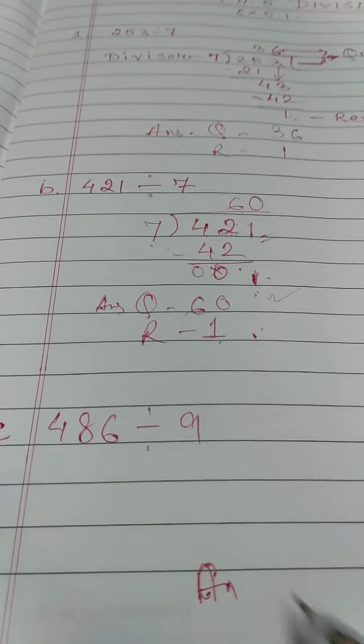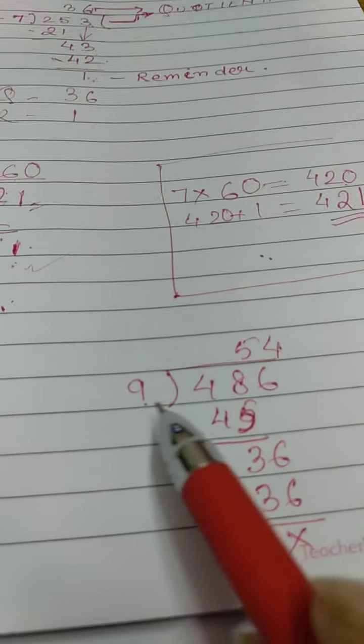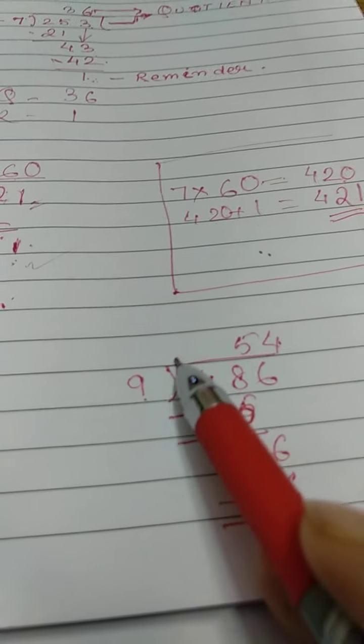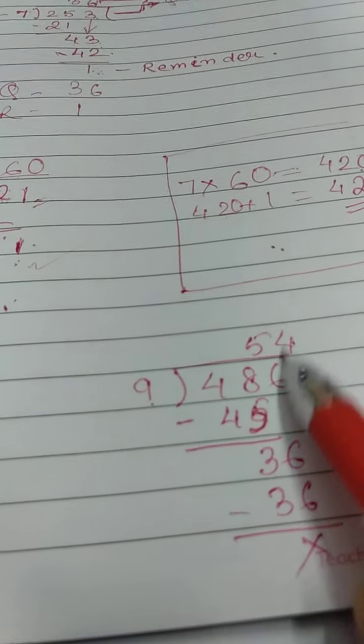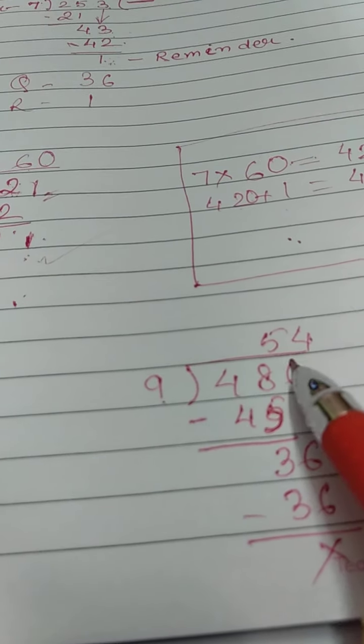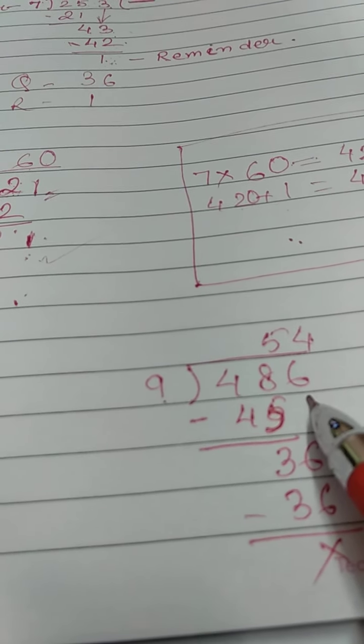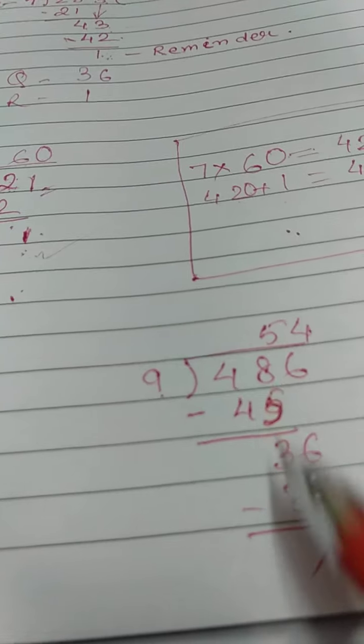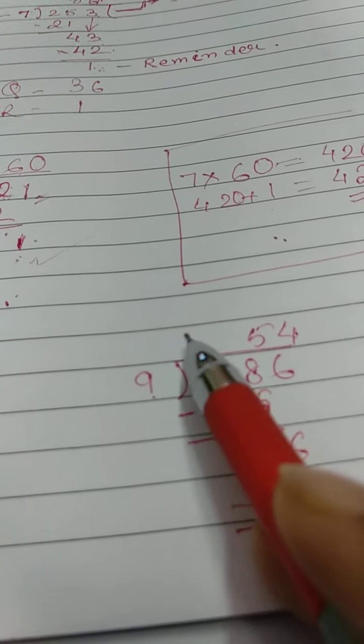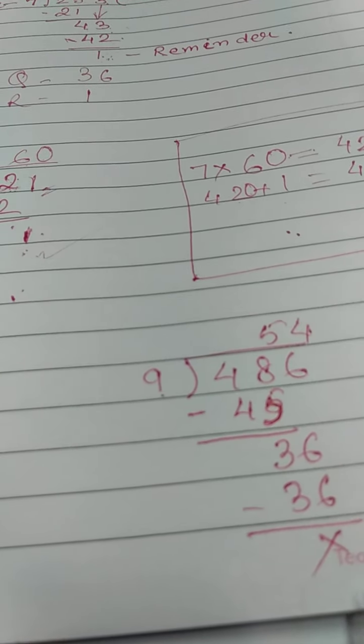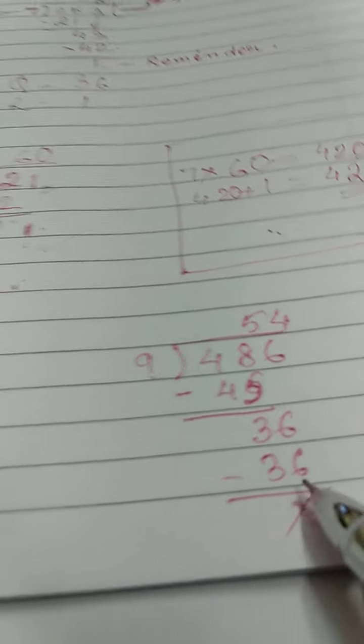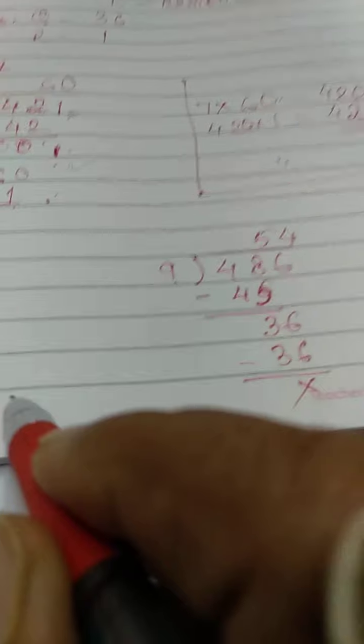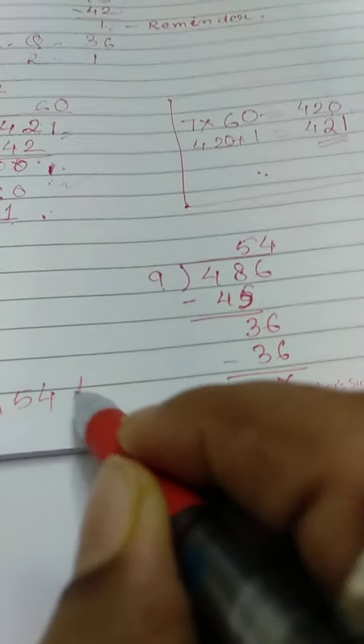Next sum. 486 divided by 9. 9 into 48, 9 minus the 9. Less than that is 5 times 45. Subtraction I will get 3. And 6 I am bringing down, 36. So 9, how much 36? 4 times 36. There is no remainder. Subtraction is 0. So the quotient will be 54.